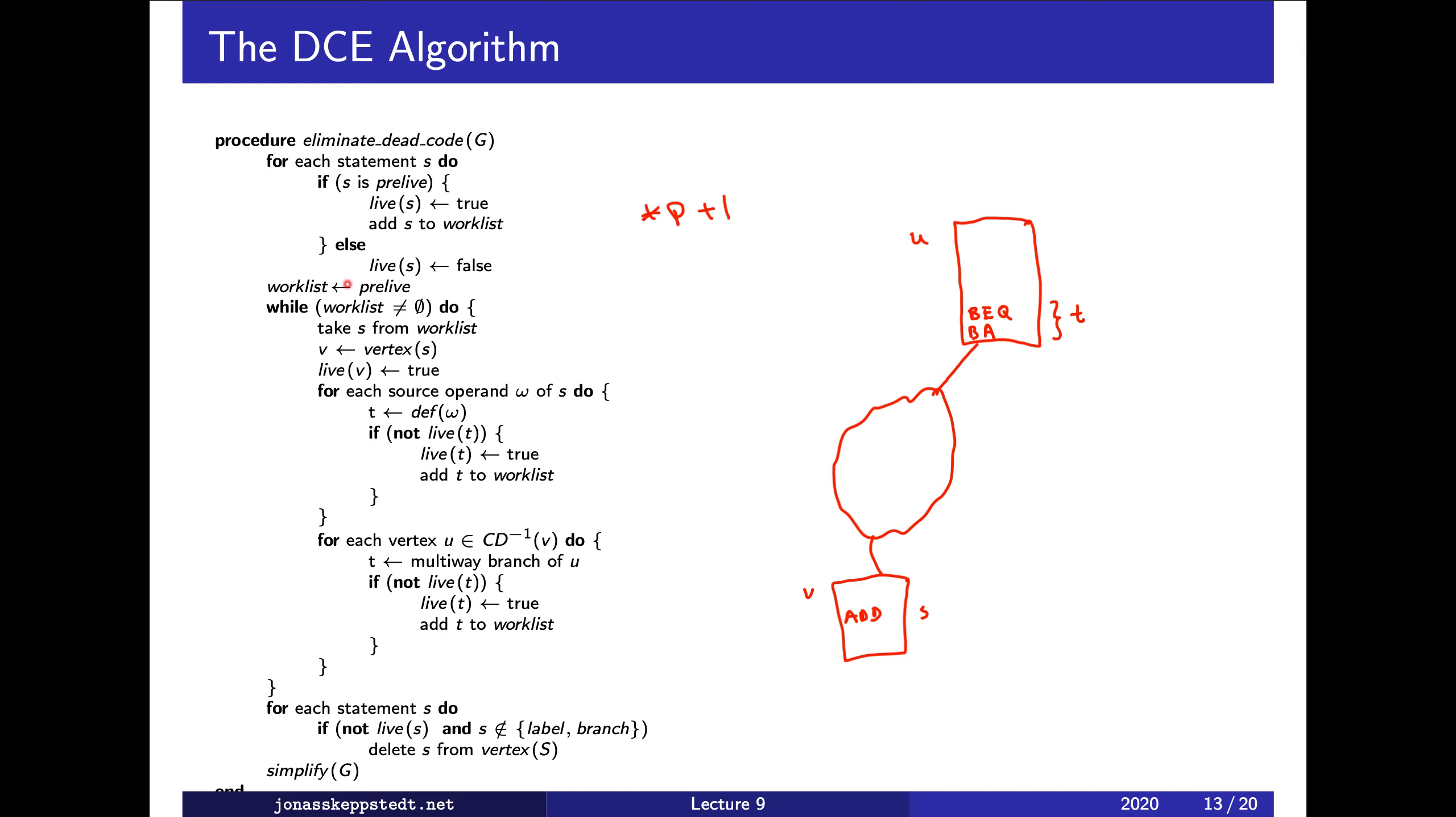We start by collecting pre-live statements and mark them as live, then collect them in a worklist. We take one thing at a time from the worklist, for instance statement s. We mark vertex v, which s belongs to, as live as well. Then we go through each operand of s and mark them as live if not already marked, adding them to the worklist.